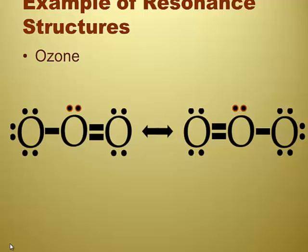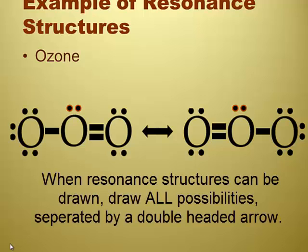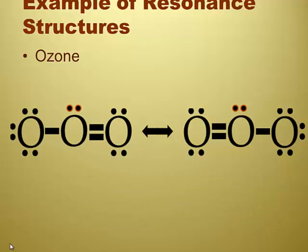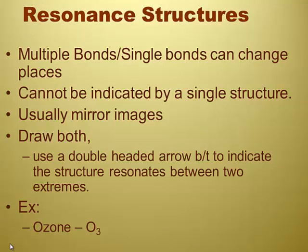But the point is that both these answers are right. Both these answers are correct, and resonance usually revolves around a double or a triple bond, usually doubles. And it would be more correct to draw both of them and draw an arrow between. That is correct. Okay. All right. That sounds good. So to summarize that, when you can't tell where the double bond goes, you draw both structures, and you use a double-headed arrow in between them to indicate that the structure resonates between two extremes.